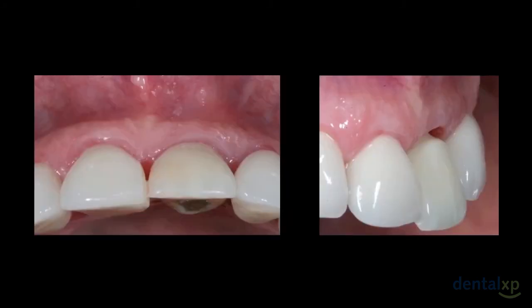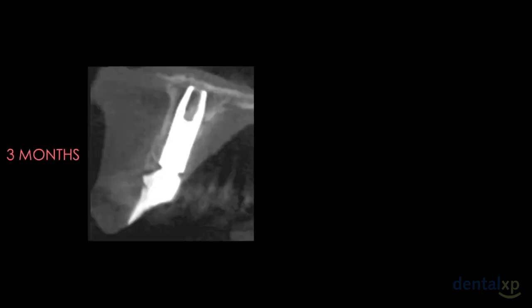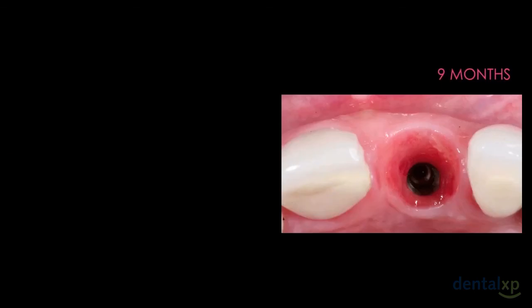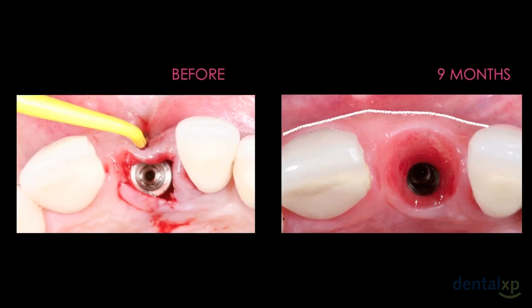Three months later, observe the volume of soft tissue in the buccal aspect. The CBCT sagittal images show the buccal and palatal bone reconstructed, and axial images evidence the reconstruction in the cervical, middle, and apical third of the implant. Nine months later, the quality and volume of soft tissues are significant. Comparing images before and after the IDR procedure confirms the maintenance of soft tissue volume in the buccal aspect.